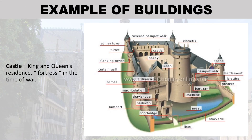An example of buildings is the castle — the king and queen's residence and fortress in time of war. The picture on the right side shows the typical parts of a castle.